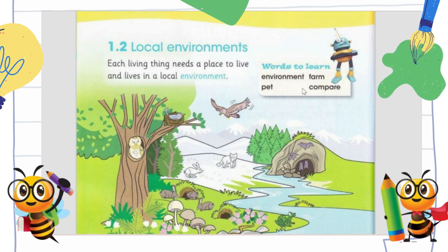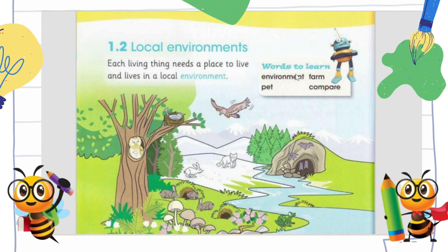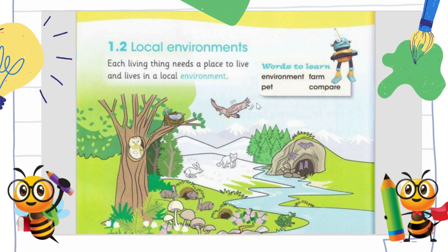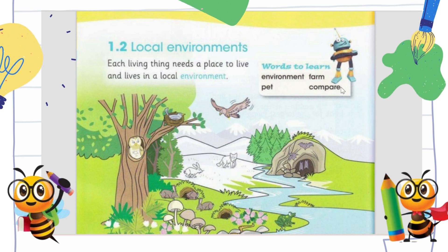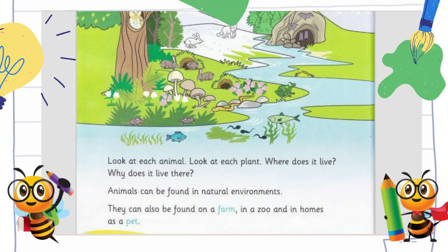Here are important words from this chapter. Let's spell them: environment — E-N-V-I-R-O-N-M-E-N-T; farm — F-A-R-M; pet — P-E-T; compare — C-O-M-P-A-R-E.